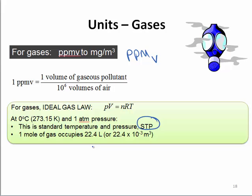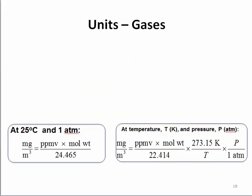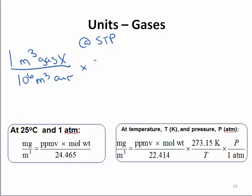Using this relationship, you can convert parts per million by volume to milligrams per meter cubed. We would start out by saying one part per million, which we could express as one meter cubed of gas X per 10 to the 6 meter cubed of air. At standard temperature and pressure, we would say that one mole of the gas X or the pollutant X occupies 22.4 times 10 to the negative three meters cubed.